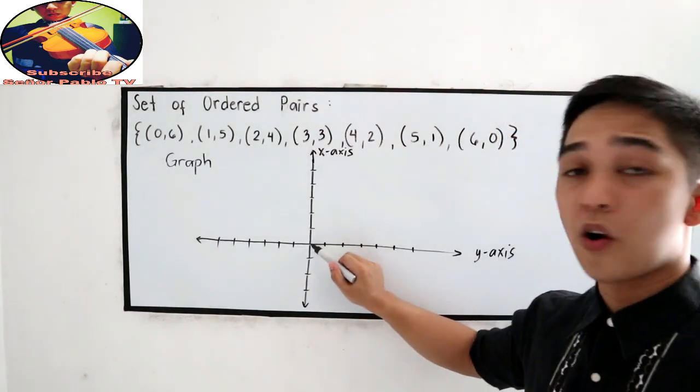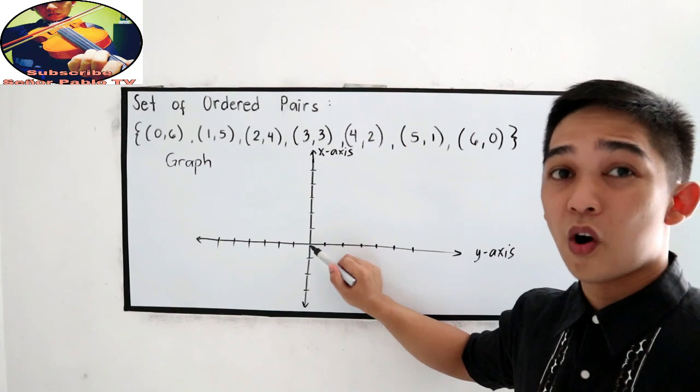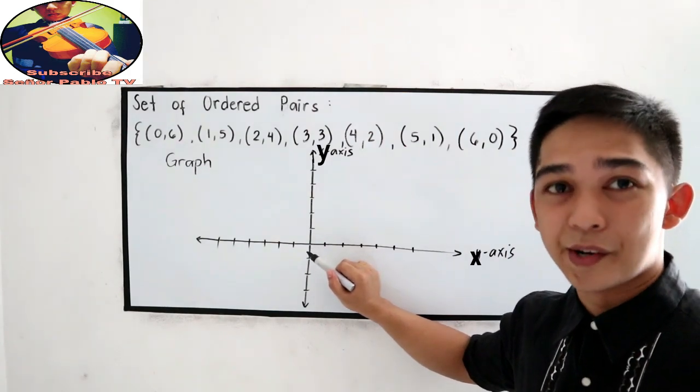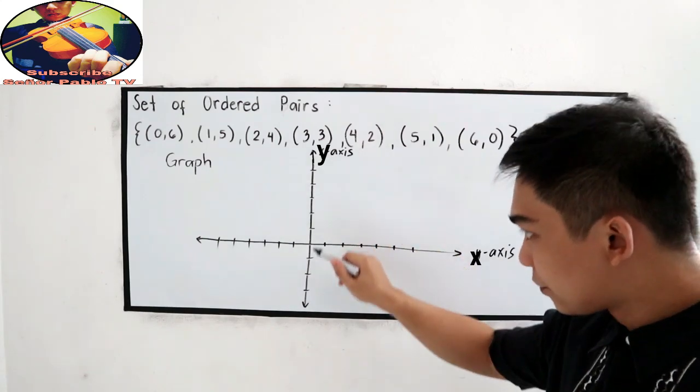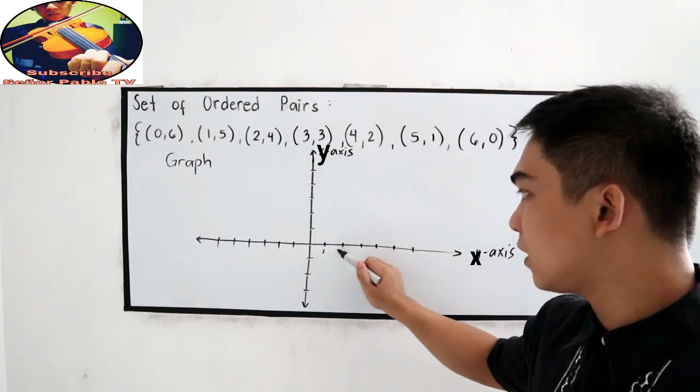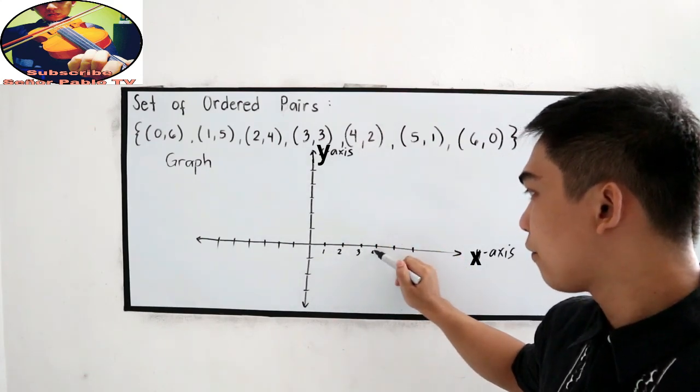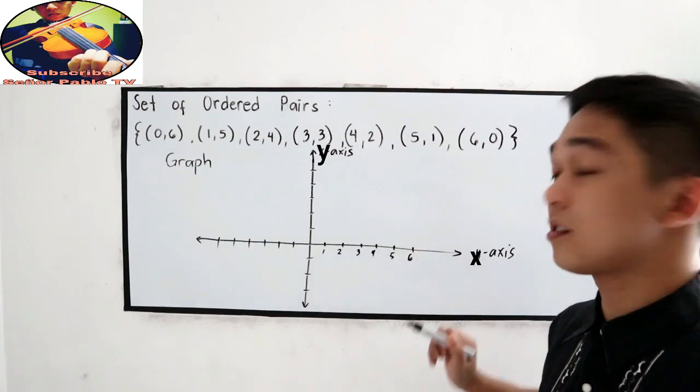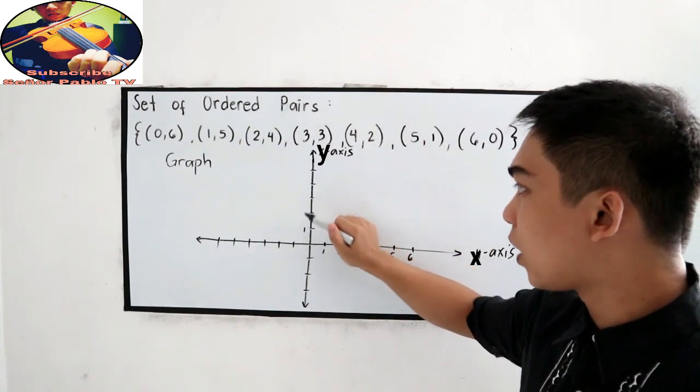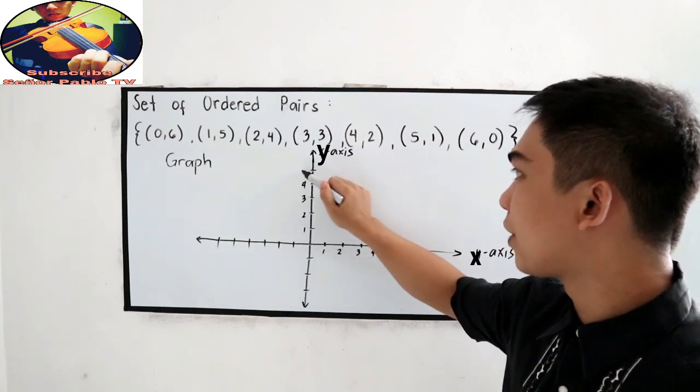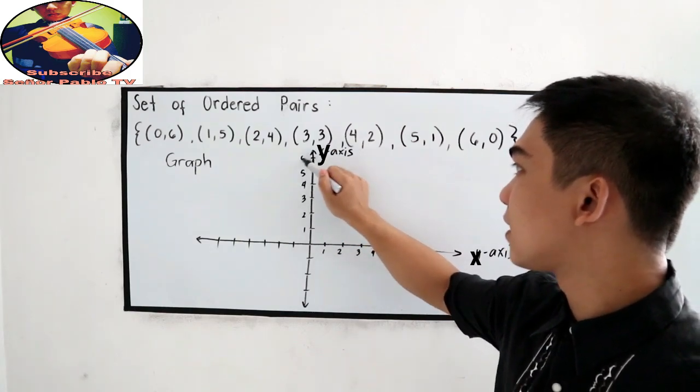This is our origin. The coordinates of the origin is 0,0. That means, on the right side of our vertical line, we have the positive 1, 2, 3, 4, 5, 6. And, upward, we have also the positive numbers 1, 2, 3, 4, 5, 6.